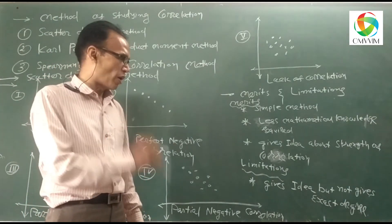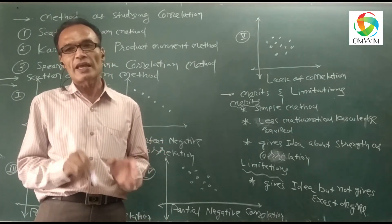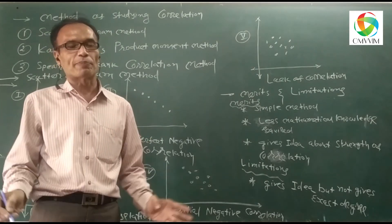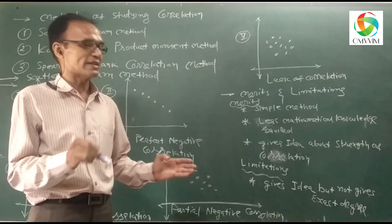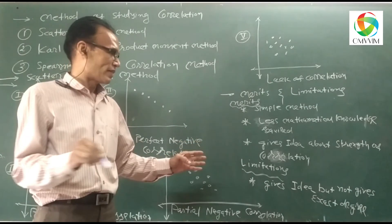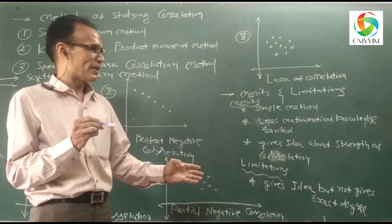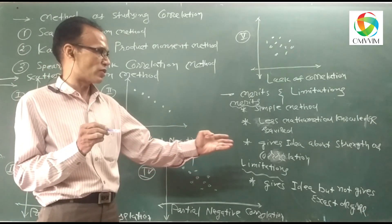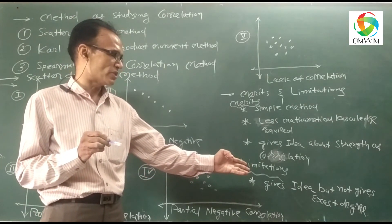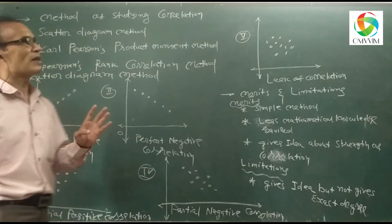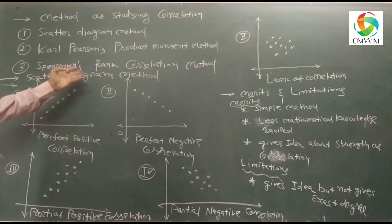The limitation is that the scatter diagram does not give the exact degree of correlation — this is the big limitation of the scatter diagram. So to summarize: merits are it is the simplest method, less mathematical knowledge is required, and it gives an idea about the strength of correlation. The limitation is it does not give the exact degree. This was the first method of studying correlation — the scatter diagram method.